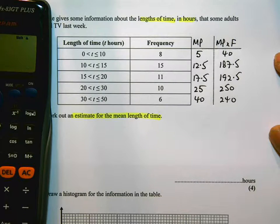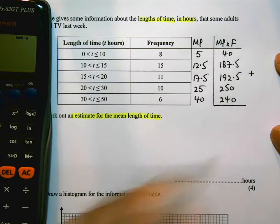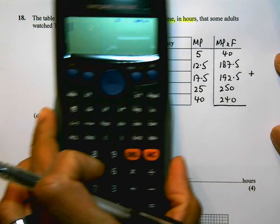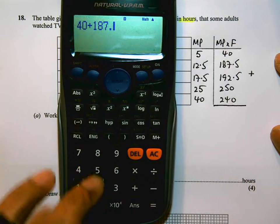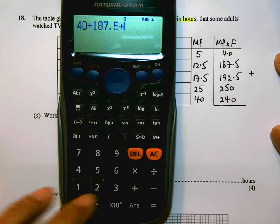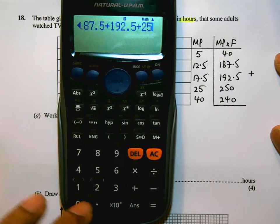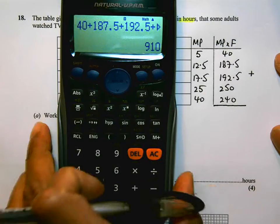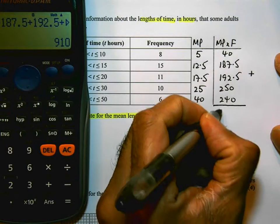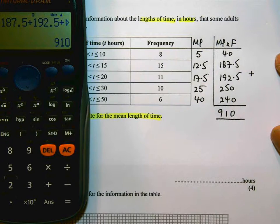I need to add these values. 40 plus 187.5 plus 192.5 plus 250 plus 240 equals 910. Now that adding up is something that I would be inclined to do twice, just to make sure I haven't made a mistake. And it's accurate.